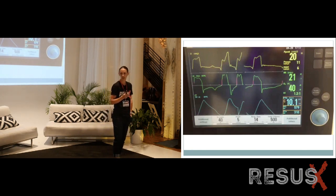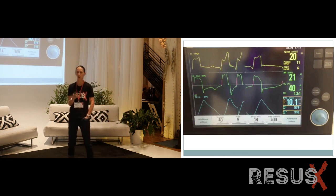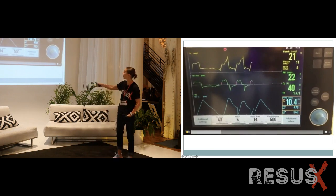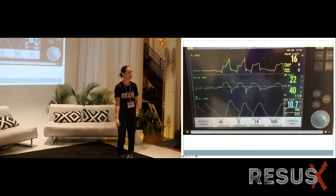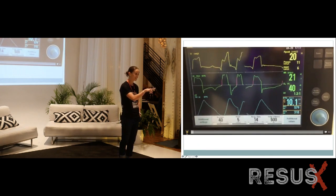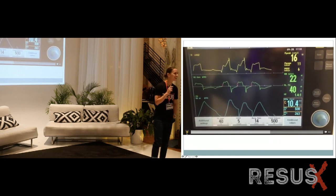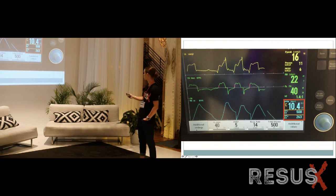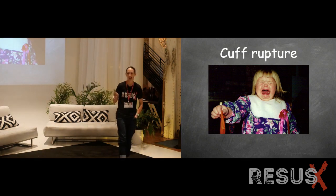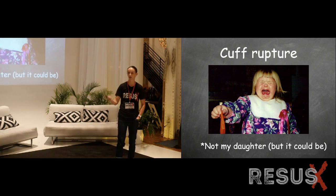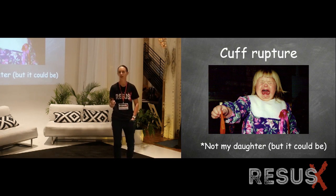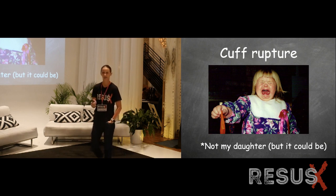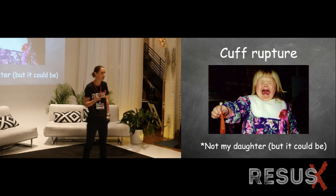Looking at the ventilator waveforms — pressure, flow, and volume — if you look at the volume tracing, you can see a problem. We have the inspiratory limb and the expiratory limb of the volume tracing, but there's a cutoff — the ventilator is not getting back the full return volume. You can actually quantify it: he's losing half his tidal volume. This is a leak. This is what you call a cuff rupture. I stumbled upon the fact that this patient had ruptured his cuff, but I didn't really have an algorithmic approach to it.